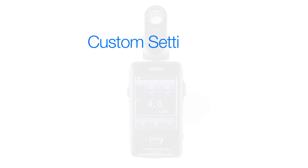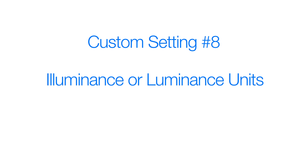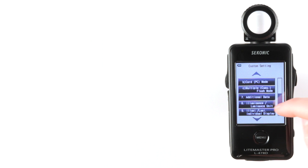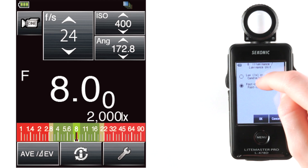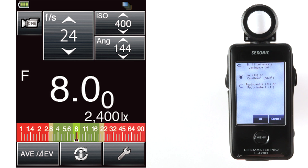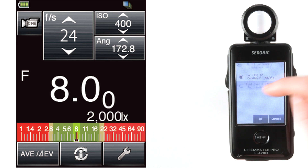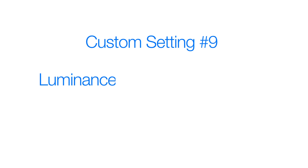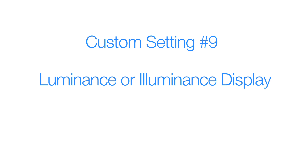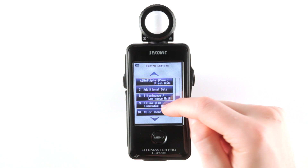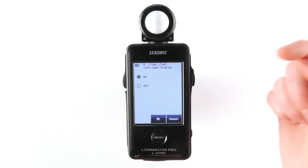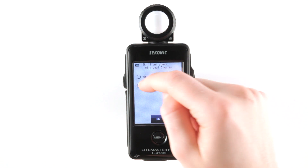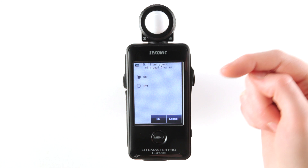Custom setting 8: illuminance or luminance units. Here's where you can select European or US units of measurement for luminance or illuminance. Custom setting 9: illuminance or luminance display. This is where you can select to turn the illuminance or luminance measurement mode icon on or off.